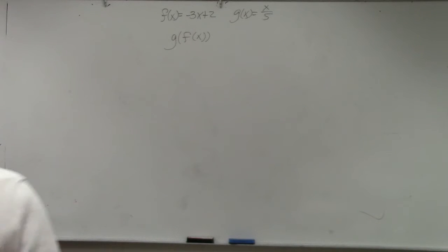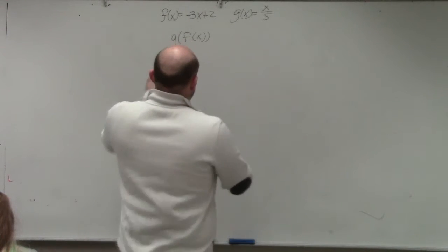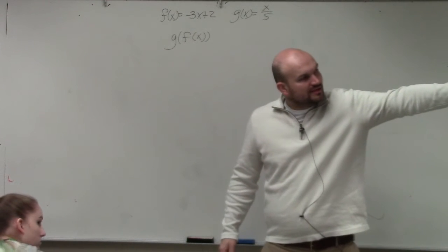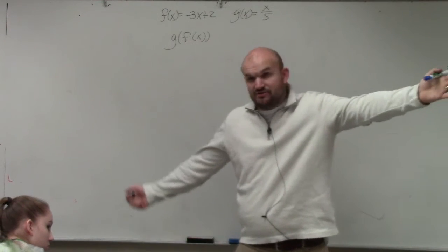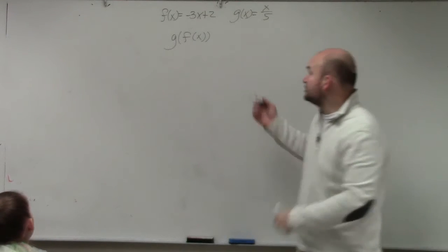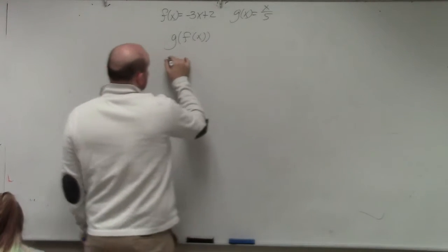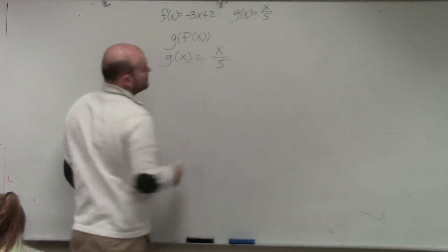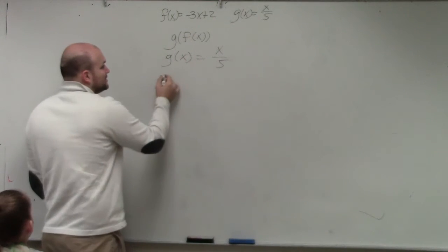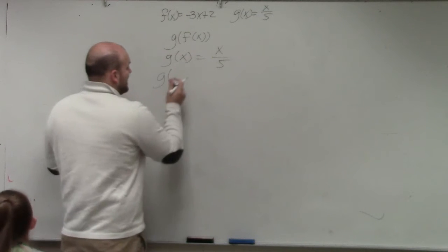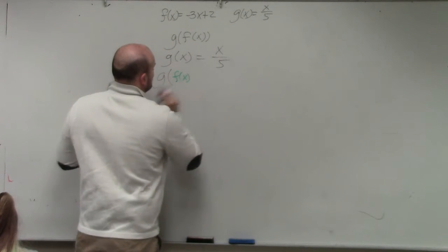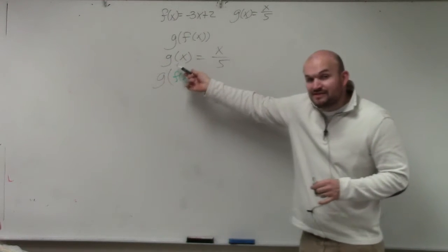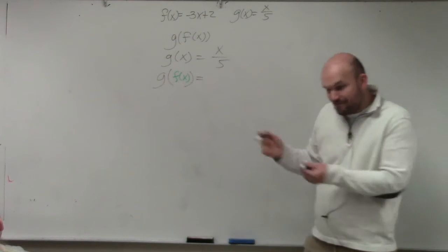What we're being asked to do is just plug one equation into the other. They say g of f of x — they don't even write it in composition notation, they just say g of f of x. So all we're simply going to do is understand that g of x is x over 5. If we're going to do g of f of x, wherever there's an input value, we're going to put f of x.